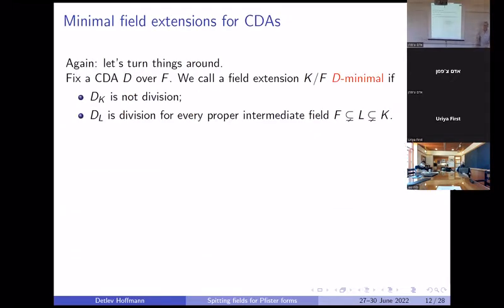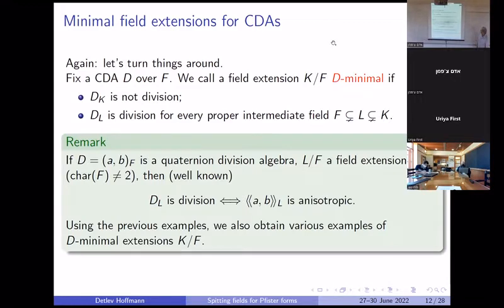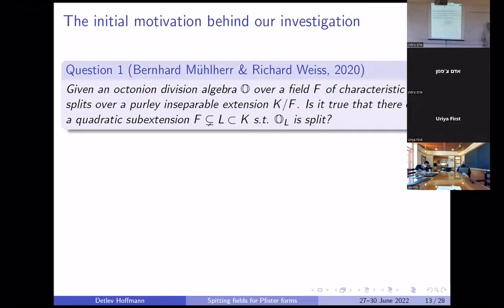You can look at other types of field extensions; maybe one can start doing research on these questions. Again, let's turn things around: we fix the division algebra, and then we call a field extension minimal for that division algebra if it becomes non-division over the field extension but stays division for any proper intermediate field. If your division algebra is a quaternion division algebra and L is a field extension, we can replace the division algebra just by its norm form, which is a Pfister form, and I asked this question for Pfister forms before.